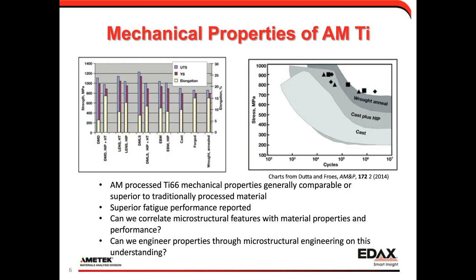To compare additive manufactured materials to traditionally processed materials, a chart from Advanced Materials and Processes shows that AM materials are pretty comparable to traditional materials but reported better fatigue performance. The idea is: can we measure microstructure with EBSD and correlate that with material properties and performance? And once we have these measurement metrics, can we use them to drive microstructural engineering to improve performance? I'd like to show the type of microstructure we can measure with EBSD on these materials.